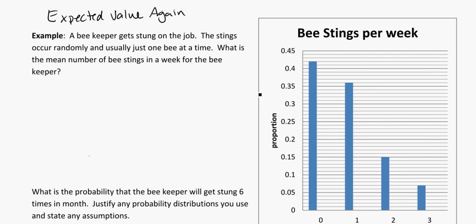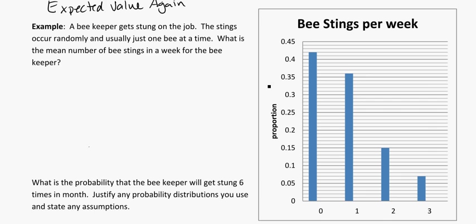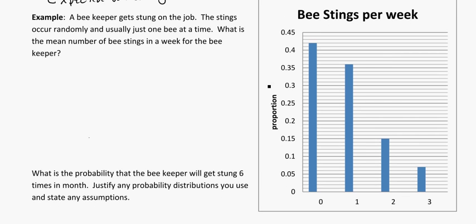What is the mean number of bee stings in a week for a beekeeper? They've given us some information, but they've presented it in a graph. I'm looking at number of stings and proportion, which is just another fancy word for probability. When you're given the proportion of something, you'll also have your probability of something happening. So if we're going to do expected value, we need to make ourselves a distribution table.